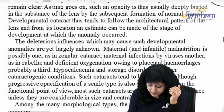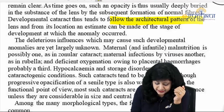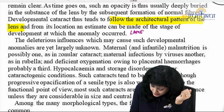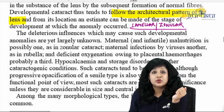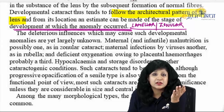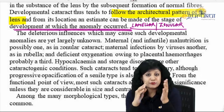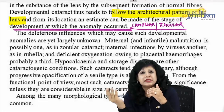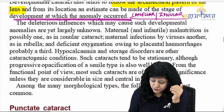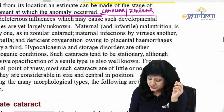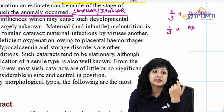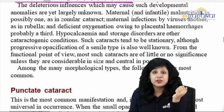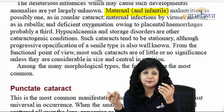As time goes on, the opacities are usually deeply buried and follow the architectural pattern of the lens — that is why it is called lamellar or zonular cataract. From its location you can estimate the stage of development at which the anomaly occurred: embryonic nucleus develops from 0 to 3 months, fetal from 3 months to birth, infantile from birth to puberty, and adult after that. Deleterious influences causing the developmental anomaly are largely unknown — one third are idiopathic and one third are genetic (autosomal dominant).